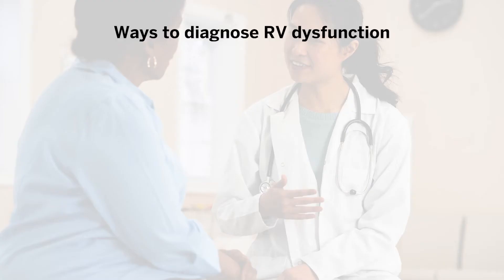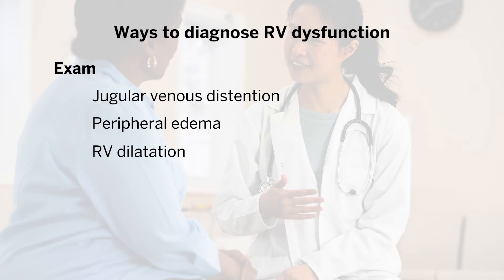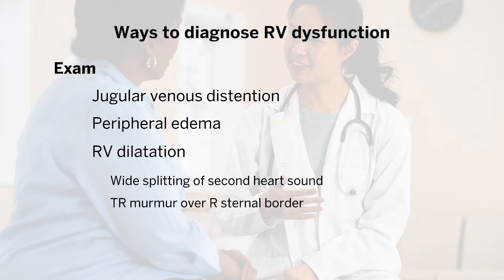When we think about how to diagnose right ventricular dysfunction, the physical exam can be important. You can have evidence of jugular venous distension, peripheral edema, right ventricular dilatation seen with wide splitting of the second heart sound, a tricuspid regurgitation murmur heard over the right sternal border, a right ventricular heave, or a right-sided S4.